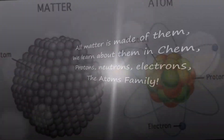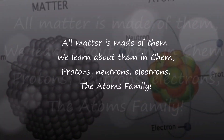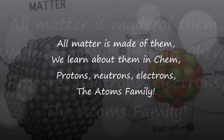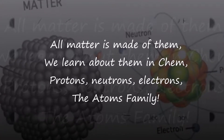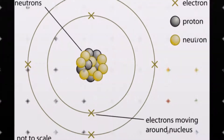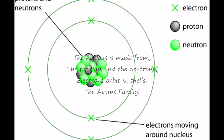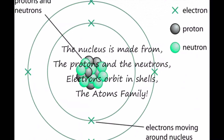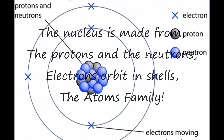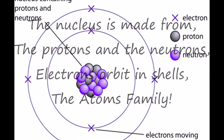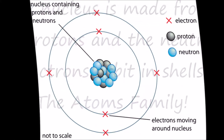Matter is made of them, we learn about them in terms. Protons, neutrons, electrons — the atoms family. The nucleus is made from the protons and the neutrons. Electrons orbit in shells, the atoms family.